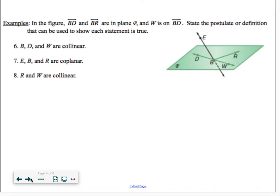And the next set of examples, in the figure, line BD and line BR are in plane P, and W is also on line BD. State the postulate or definition that can be used to show that each statement is true. Your job is to justify how do we know that they are true. In question number six, it says points B, D and W are collinear. Well, there are three points all in the same line. We know a line has infinitely many points. The third postulate says that a line must contain at least two points. Therefore, it could have three, like B, D and W.